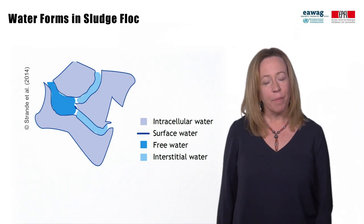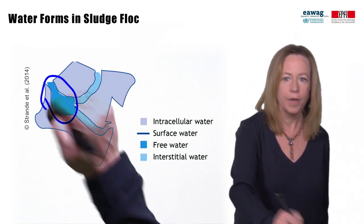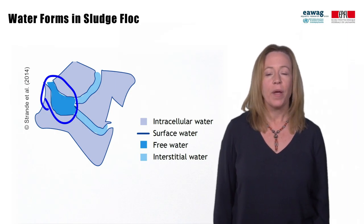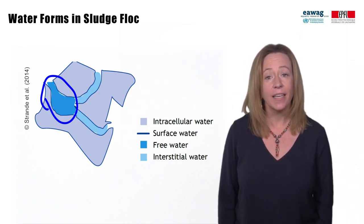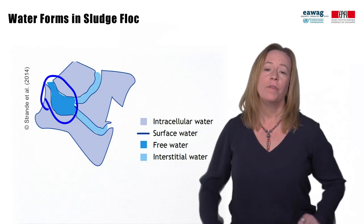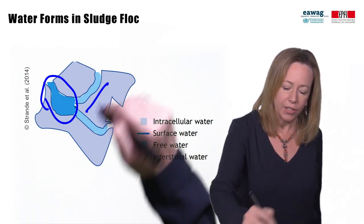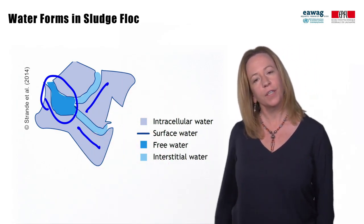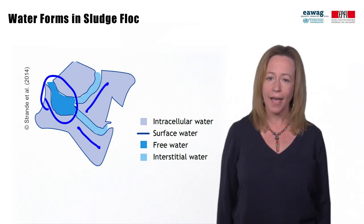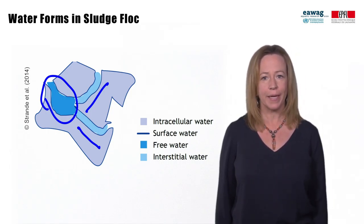Water that can be separated through gravity or filtration is free water that is more easily separated from solids. This is analogous to water that can be wrung out of a towel. If you need more liquid removed from the sludge, then you also need drying, for example, by the sun through evaporation on the surface of drying beds.